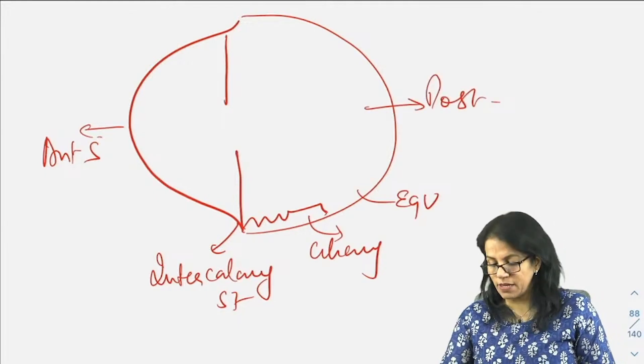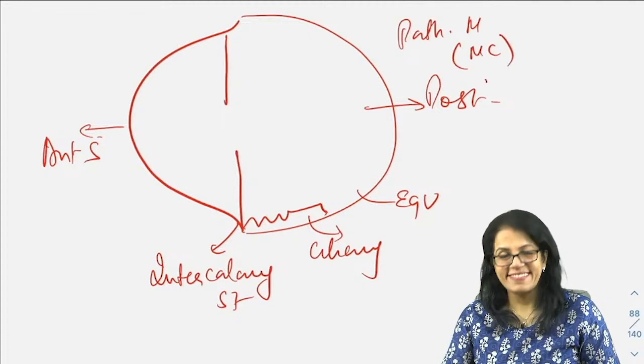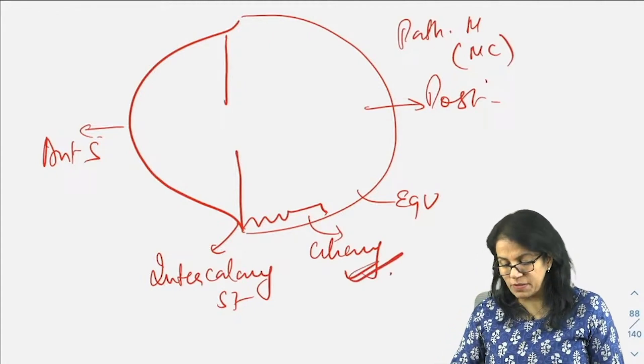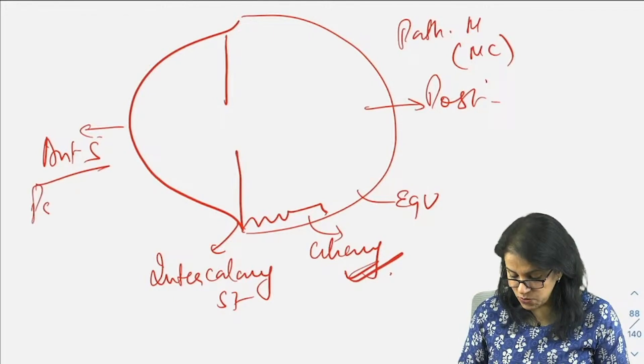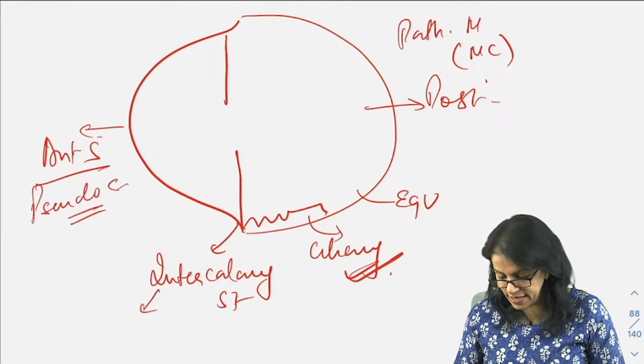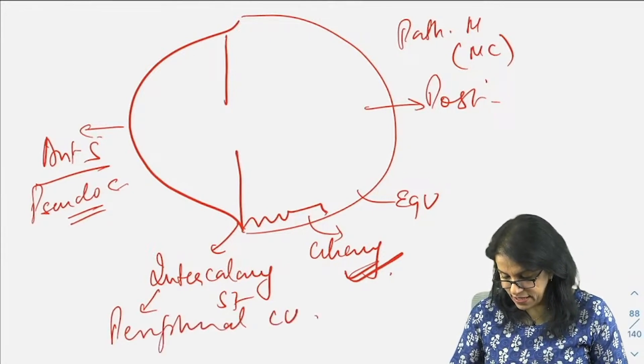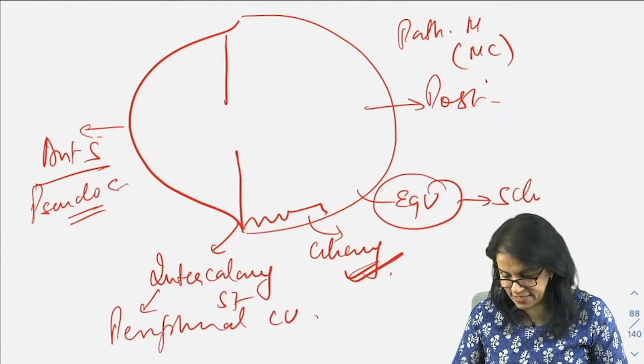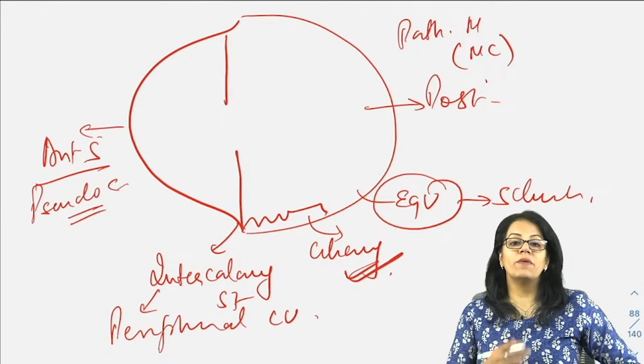Scleritis. Pathological myopia is most common, and ciliary generally happens due to scleritis. MTML generally causes pseudocorneas, this is intercalary. Any peripheral corneal ulcer, scleritis. That was quick about staphylomas and the different types.